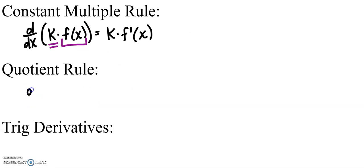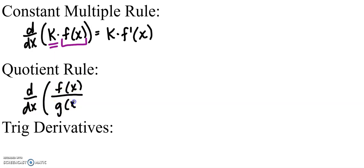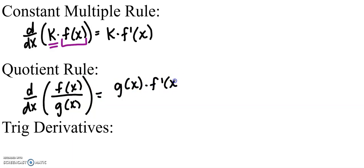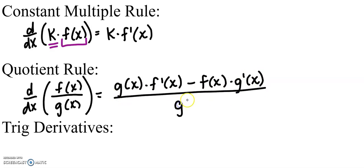The quotient rule: taking the derivative of f(x) divided by g(x) equals the lower function times the derivative of the higher function, minus the higher function times the derivative of the lower function, all over the lower function squared. 'Low d high minus high d low over low low' is a way you can remember that.